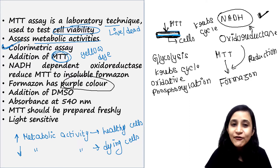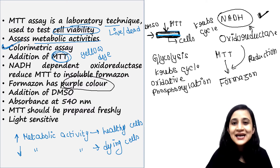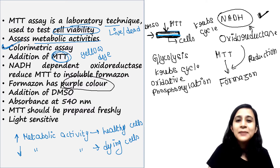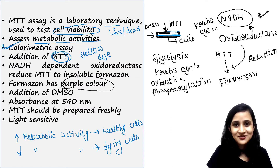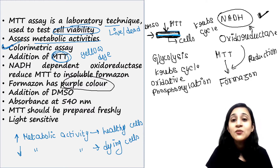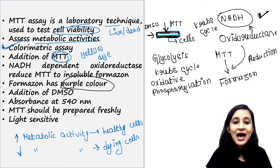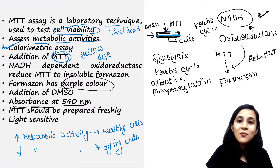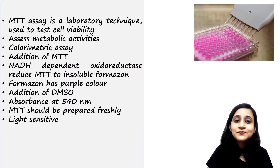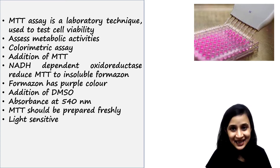We then add DMSO, which is a solubilizing agent to dissolve formazan. If formazan doesn't dissolve properly, we cannot measure it accurately. Then we measure its absorbance at 540 nanometers.